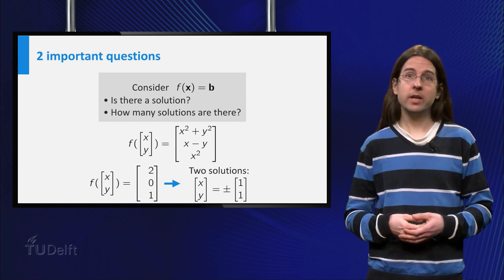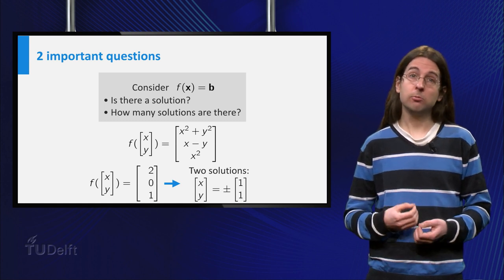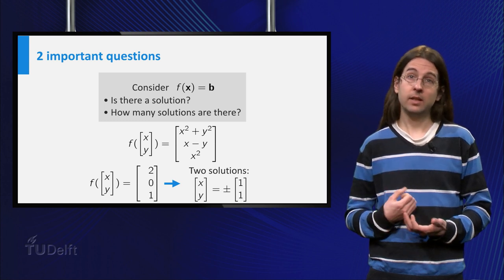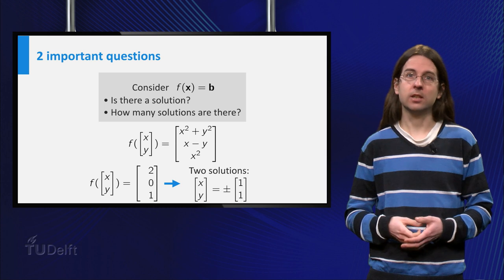Finally, the equation f(x) = (2, 0, 1) has the solutions (1,1) and (-1,-1), as you can check.